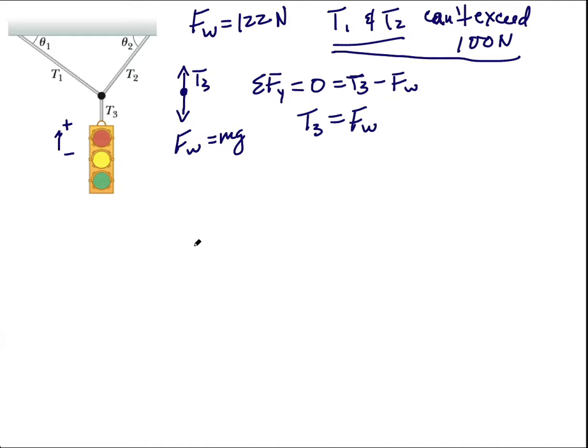We don't want these guys to exceed 100 newtons. So let's see what's going on. So I'm going to redraw the free body diagram. Here's the dot where T1, T2, and T3 are connected. And then this one's at a different angle. So something like this. And this is theta one. This is theta two. So theta one, theta two, and there's a tension here.